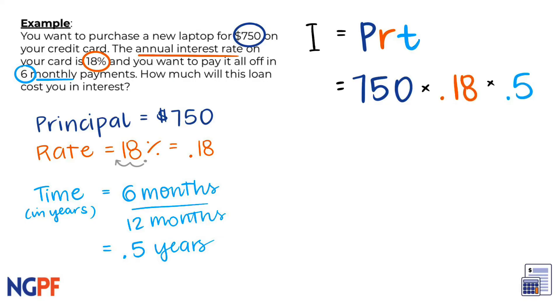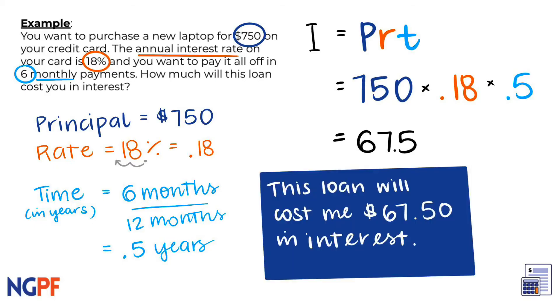When we multiply all of these values together, you should get 67.5. That means that the loan will cost $67.50 in interest.